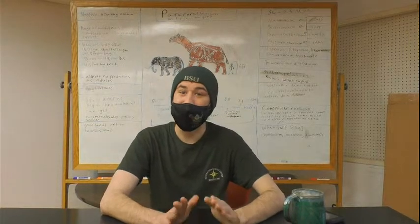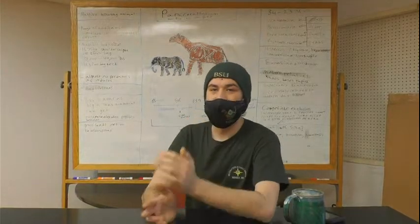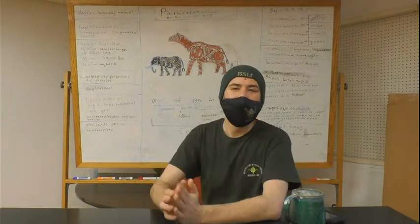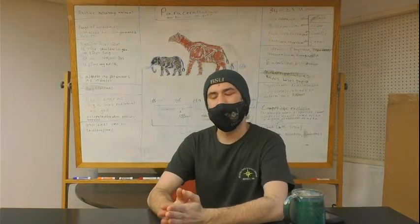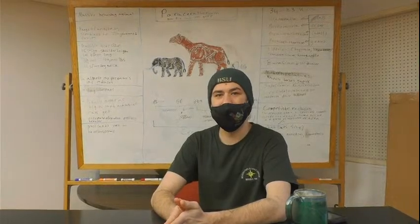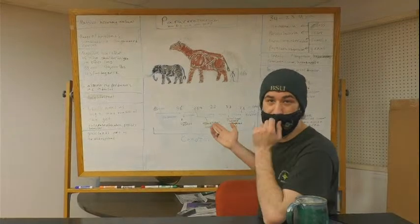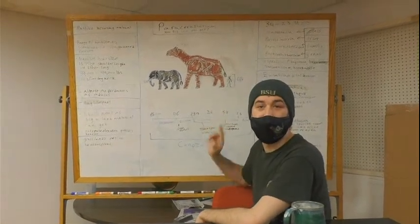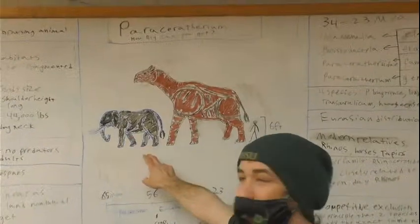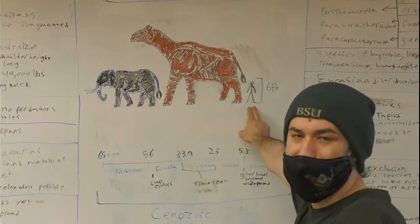So today we're going to talk about another animal from the earlier Cenozoic and that is Paraceratherium. So Paraceratherium is probably one of the most spectacular mammals to ever live and for a really distinct reason. Behind me I drew something. So I typically draw for scale a person but today I wanted to draw for scale another animal that we tend to have a bit more familiarity with. So right here is an African elephant. We have a human behind the Paraceratherium.